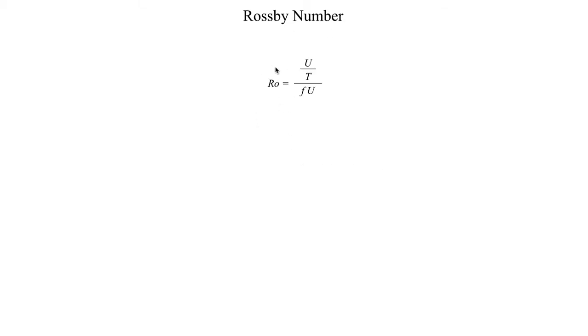Going through some of the math here, Rossby number is characteristic wind speed divided by characteristic time, the entire thing divided by Coriolis parameter multiplied by characteristic horizontal wind speed. We can use the fact that speed equals distance over time, so this is where L enters the story. Speed equals the length divided by the time. If we solve for time in that equation, we get that capital T, the characteristic time scale, is equal to the horizontal length scale divided by the characteristic horizontal wind speed.